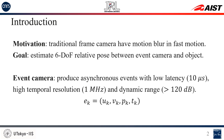Our problem is to estimate six degrees of freedom pose between event camera and object. Traditional frame cameras have severe motion blur problems in fast motion. That's why we use an event camera — a novel sensor that produces asynchronous events with low latency, high temporal resolution, and dynamic range. The event camera triggers a new event e_k at time t_k when a change of logarithmic brightness reaching contrast sensitivity c is detected at pixel u_k, v_k. The polarity p_k denotes whether the brightness increases or decreases.